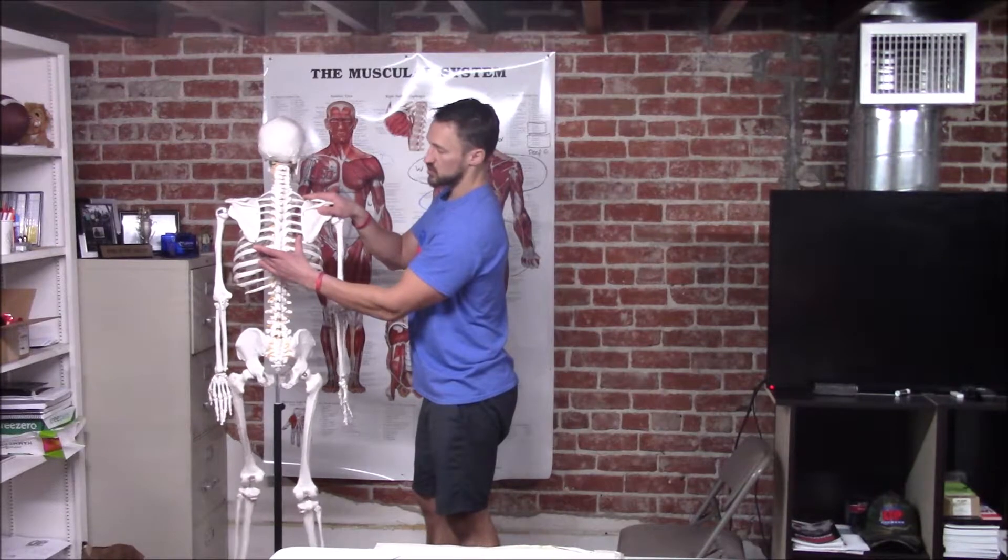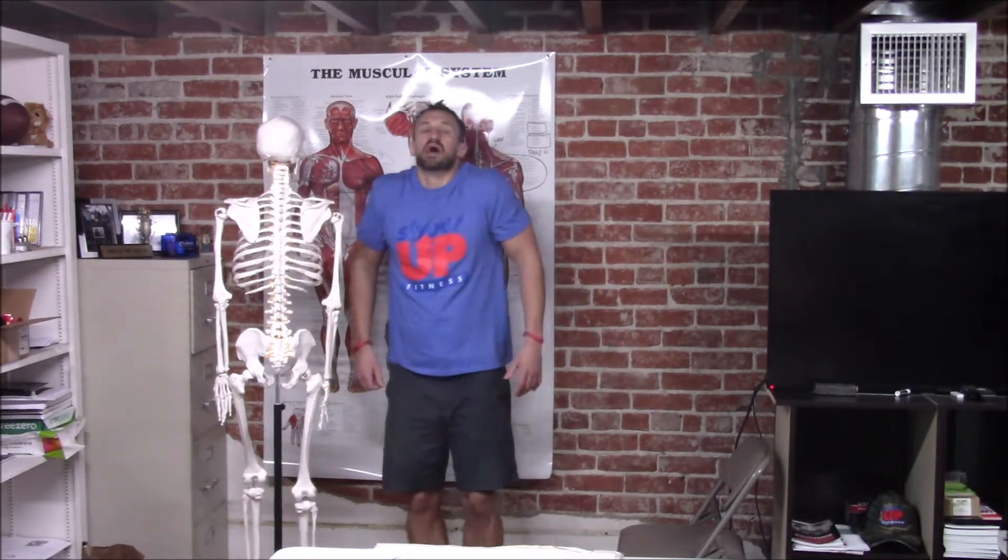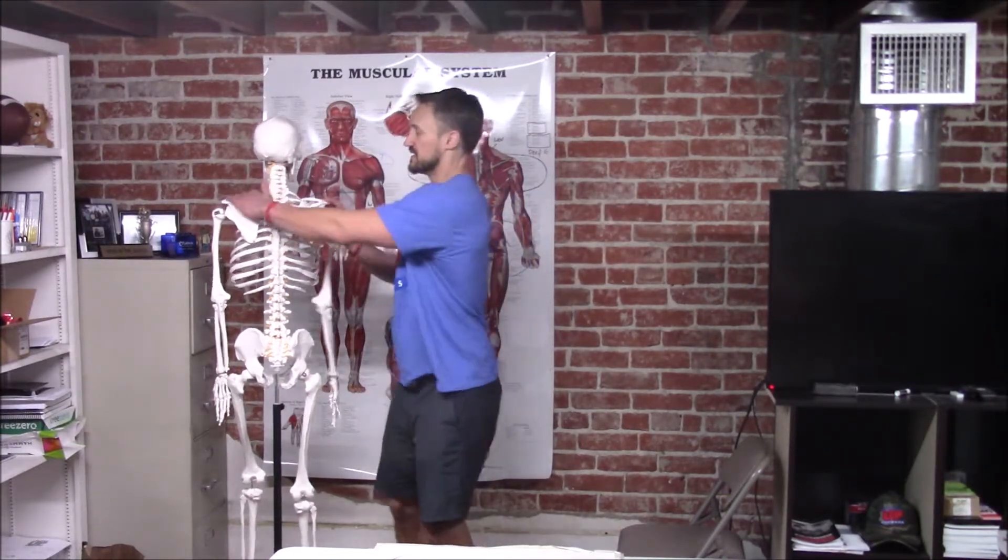There's three parts, one muscle. We have the middle traps, lower traps, upper traps. They elevate, they retract and depress, they upward and downward rotate the scapula. And that's really the main muscles we're going to talk about for the muscular system when it comes to a trainer.